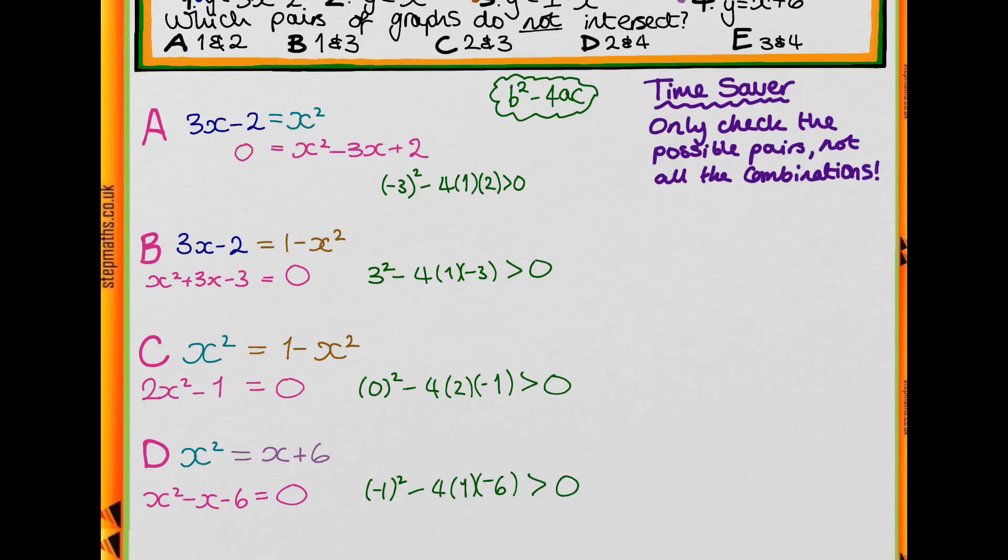Continuing in exactly the same way, we do it for D and get that it's greater than 0. When we do it for E, we get that the discriminant is less than 0. This means the graphs don't intersect, so E is our correct answer.